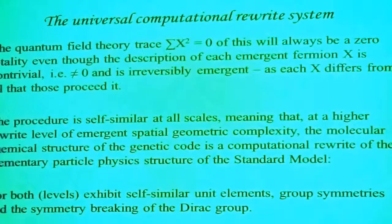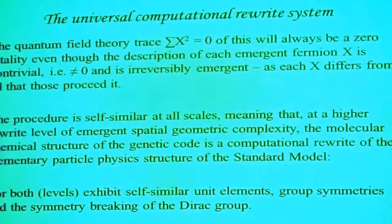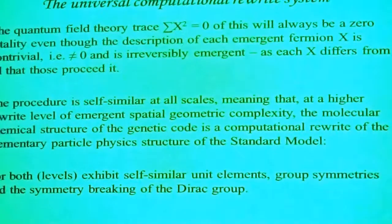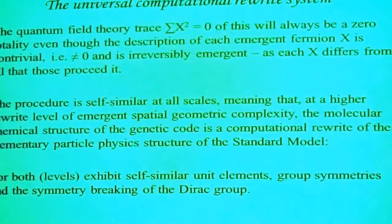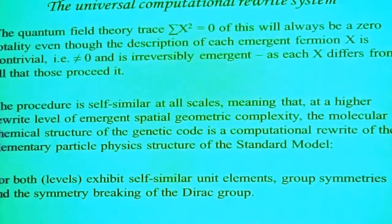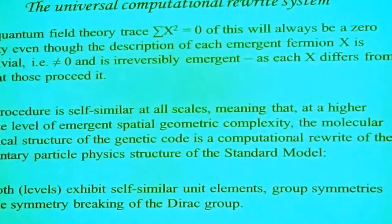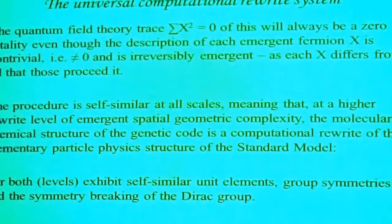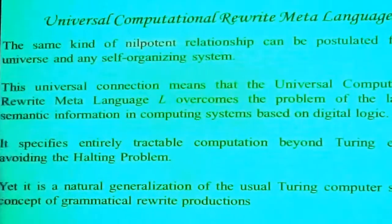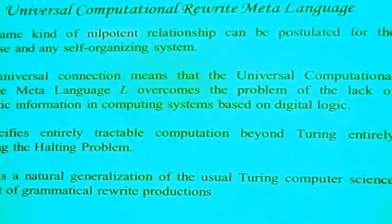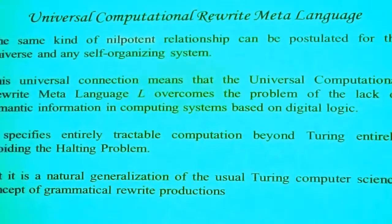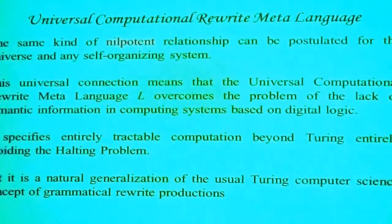The quantum field theory trace will always be a zero totality, even though each fermion is non-zero and non-trivial — it's a non-trivial square root of zero. And it's irreversibly emergent because each must be different from all that preceded it. Nothing can be repeated, not even time — it has to be a unique birth ordering. We get self-similarity at all scales.